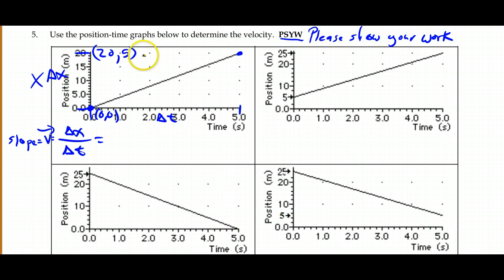Now, it's always final values minus initial values. So, on this graph, this is the final point that I have. This is the initial point. So, I'm going to take X final minus X initial. And I'm going to divide that by time final minus time initial.